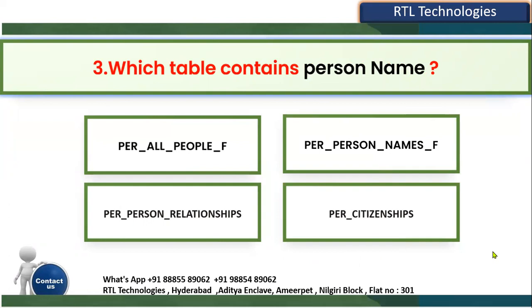Next: which table contains the person name? Even as a functional consultant, some basic tables we must be very clear on — like the person table, worker table, jobs table, positions table, and locations table. Sometimes we want to access information from the back end through reports or analytics and write simple queries. Here, which table holds first name, last name, and full name details?